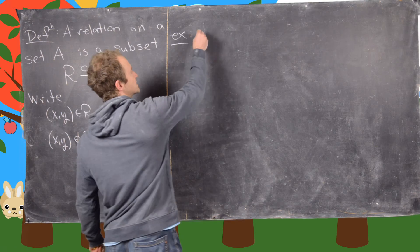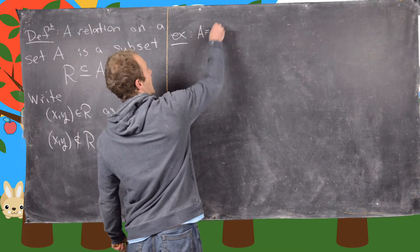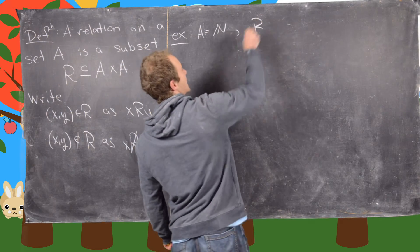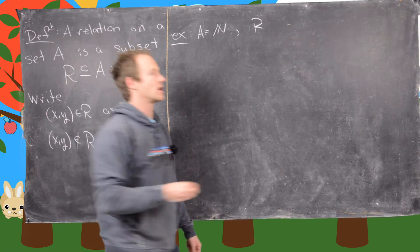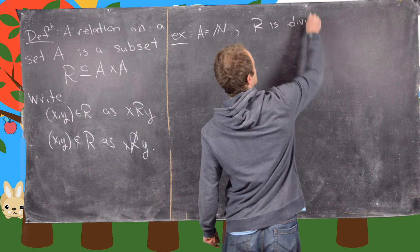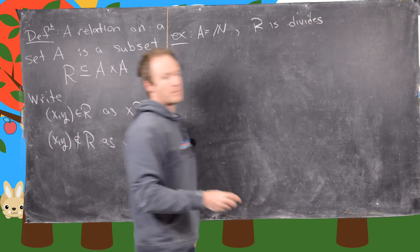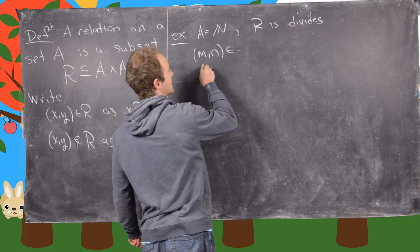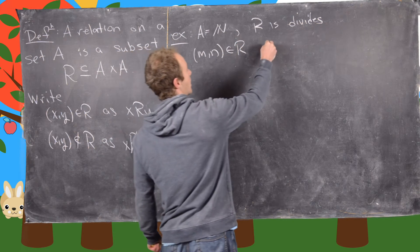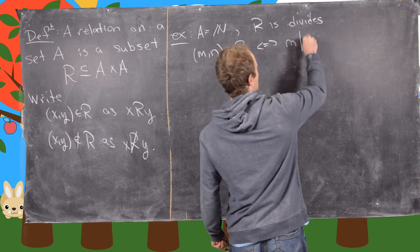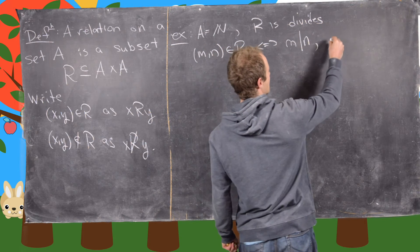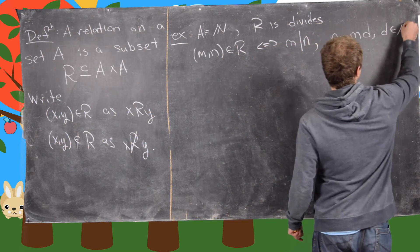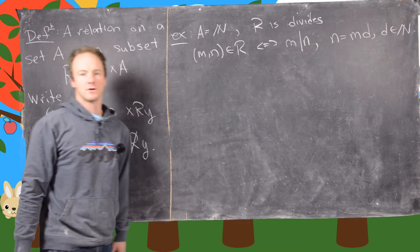So the last example I want to look at starts off with our set A, which we'll let in this case be natural numbers. And then let's say our relation is R is divides. So by that, I mean that M comma N is in R if and only if M divides N. And so what I mean by that, we can write N equals M times D for some D, which is a natural number.